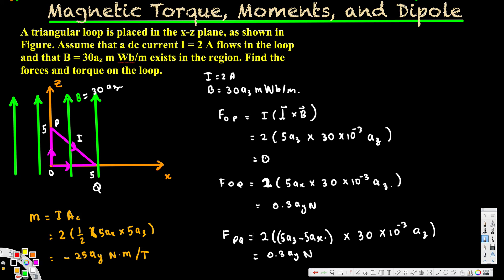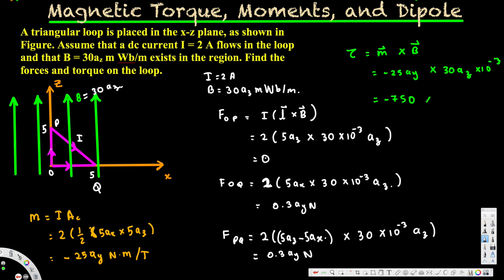Now we calculate the torque using τ = m × B. The magnetic dipole moment is −25ay, crossed with the magnetic field 30 × 10⁻³ az. This gives −750 × 10⁻³, and since y cross z = x, the result is −0.75ax Newton·meter.